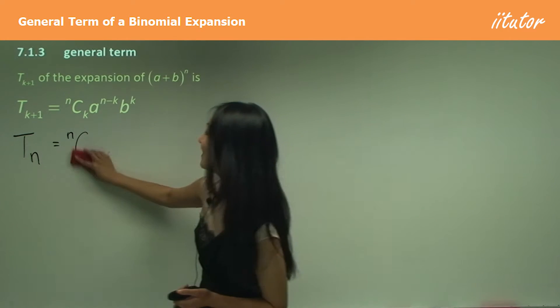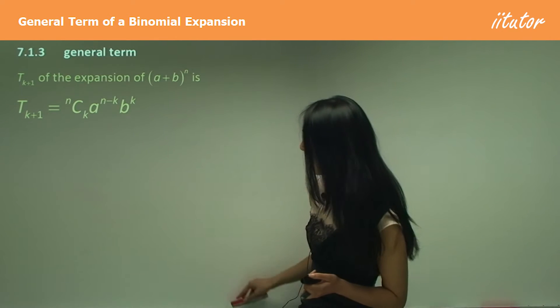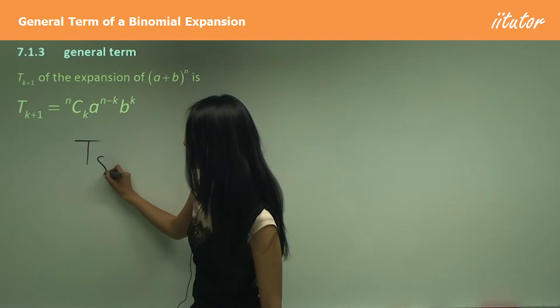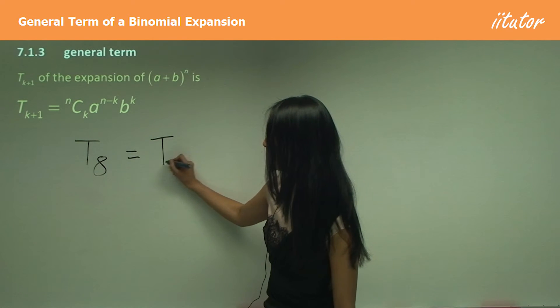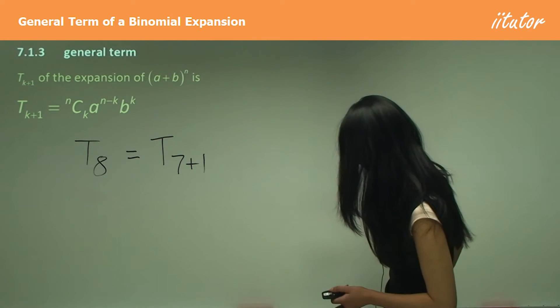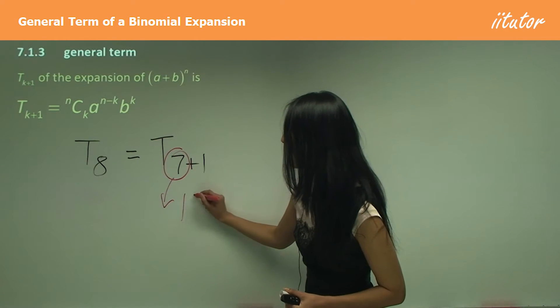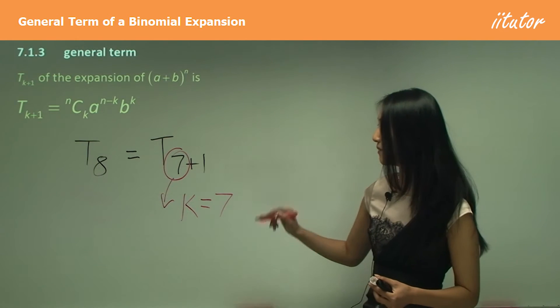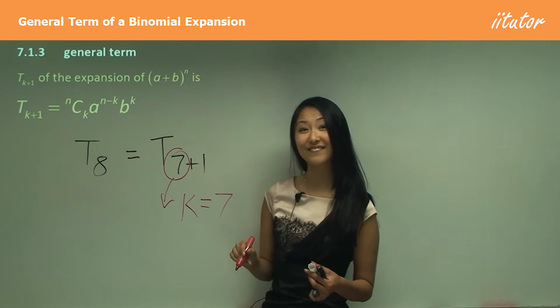So why that's important to know that we're adding one here instead of subtracting one there, is that when the question wants you, for example, to find the eighth term, what's important for you to do is know that this is the same as T_{7+1}. And this seven here is our k. So k equals to seven. And it's that k that we need, as you can see, to be put into our expansion over there.